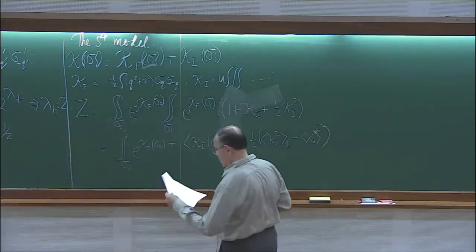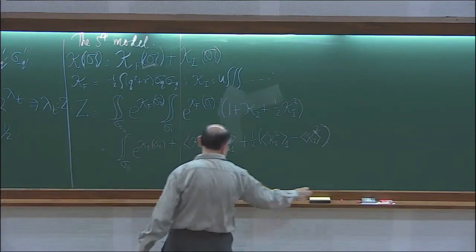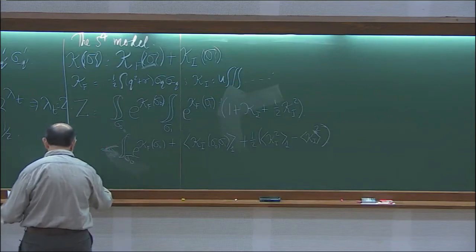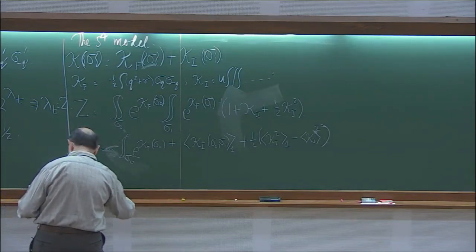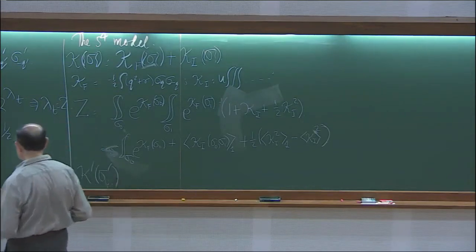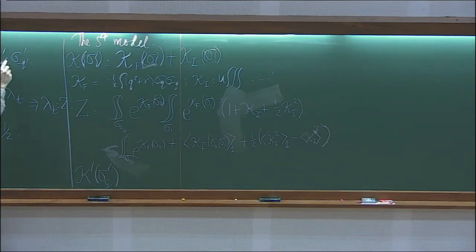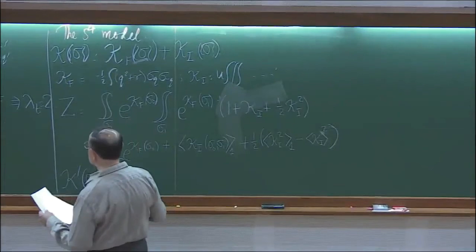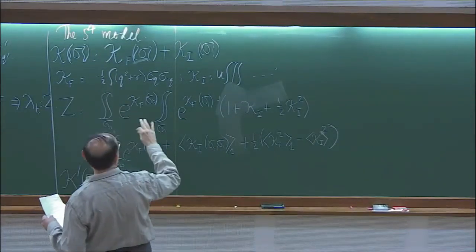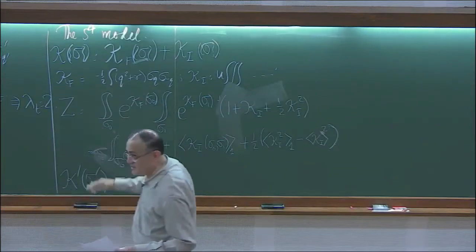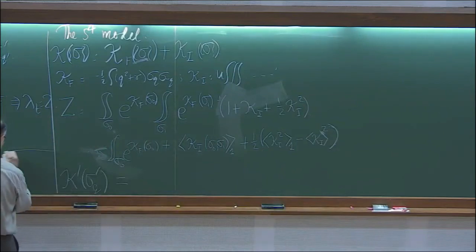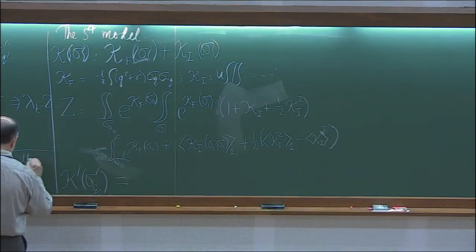We need to also do the rescaling steps. The effective Hamiltonian K prime of sigma prime(q) — after these steps — is K_f of zeta times sigma(2q prime), sigma prime(2q prime), plus the perturbative corrections. K prime is the new effective Hamiltonian after renormalization.